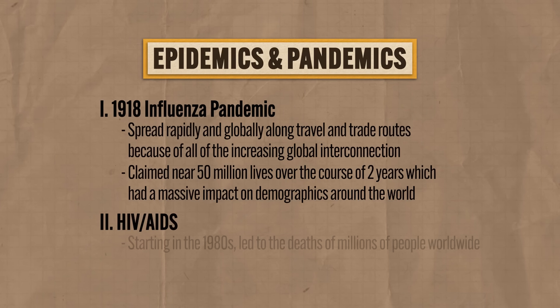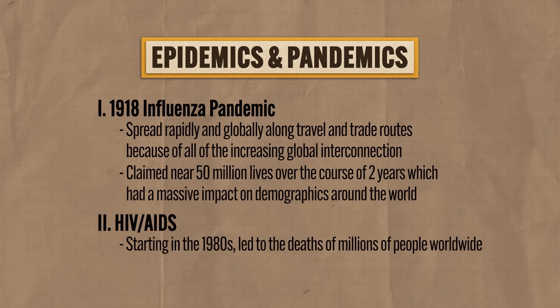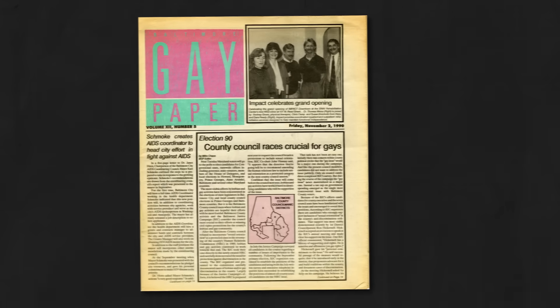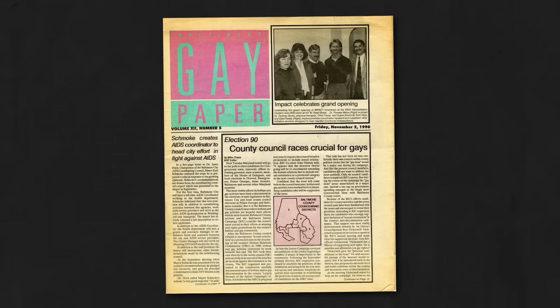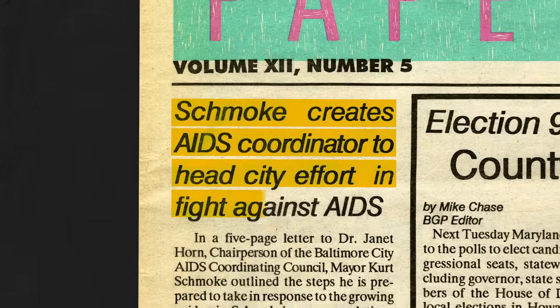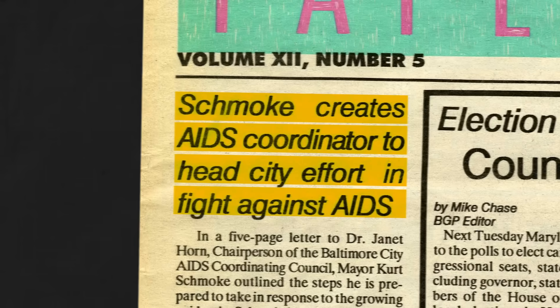The second epidemic you need to know is the spread of HIV-AIDS, which starting in the 1980s led to the deaths of millions of people worldwide. HIV is the virus that causes AIDS, which severely depresses the immune system, making a person vulnerable to other diseases which they could otherwise fight off. Because this disease was associated early with gay men and drug addicts, funding for research into a cure was, to put it mildly, difficult to come by.